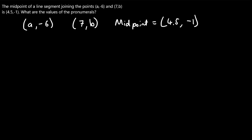So, midpoint — what's the formula for midpoint? That's (x1 + x2) all over 2, and (y1 + y2) all over 2, because we're finding the middle of these points, or the average values of the x values and the y values, and that'll give us the midpoint.